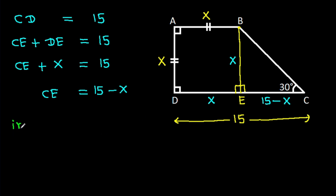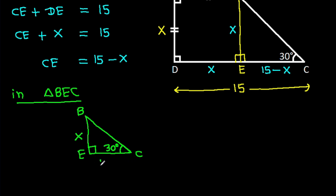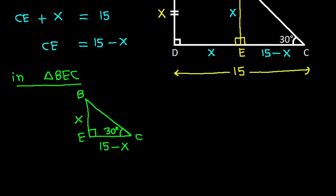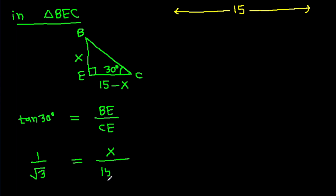And now, in triangle BEC, angle BEC is 90 degrees and angle BCD is 30 degrees. So tan(30°) equals BE over CE, and tan(30°) is 1 over root 3. So we have 1 over root 3 equals X over (15 minus X).